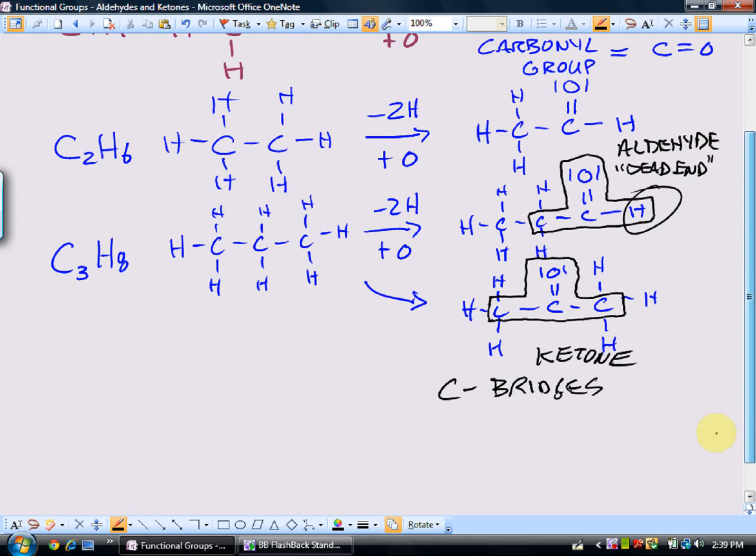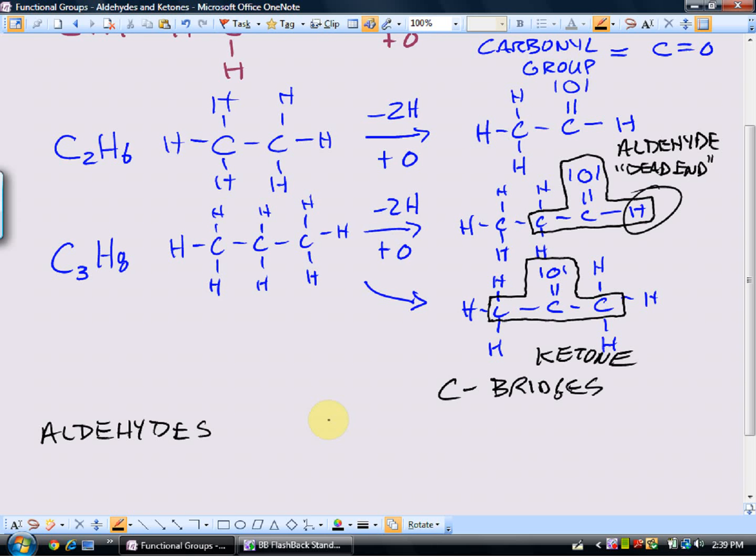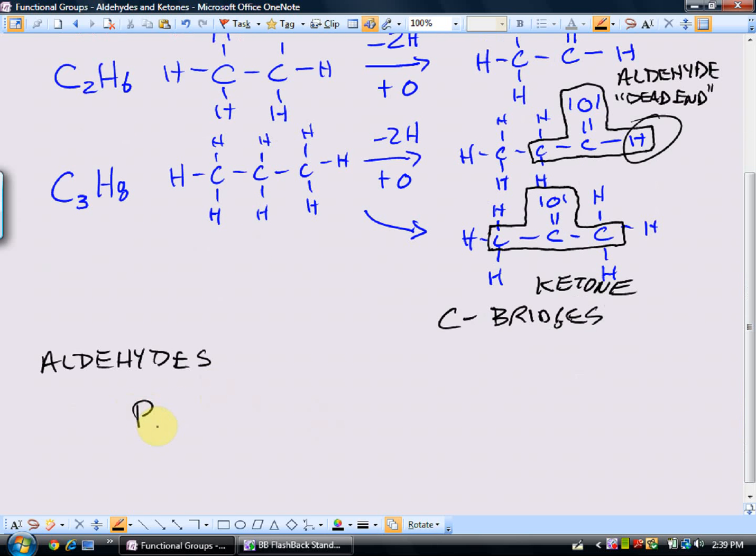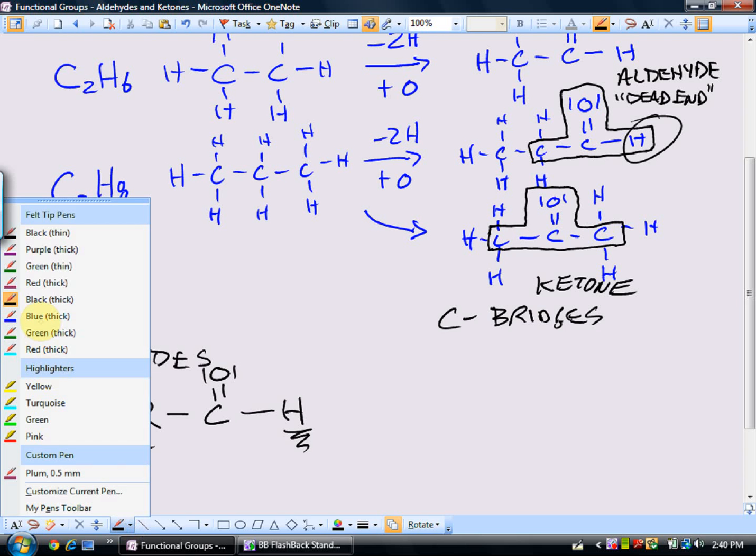So in terms of general formulas, aldehydes look like this. Aldehydes have a carbon group. Again, remember R designates a carbon group connected to that carbon-oxygen double bond, which is then connected to a hydrogen. So the key here is there's always a hydrogen on one side of that carbonyl. That's our aldehyde. So aldehydes you can think of only grow in one possible direction by adding carbon to this side. This side of the aldehyde is fixed.